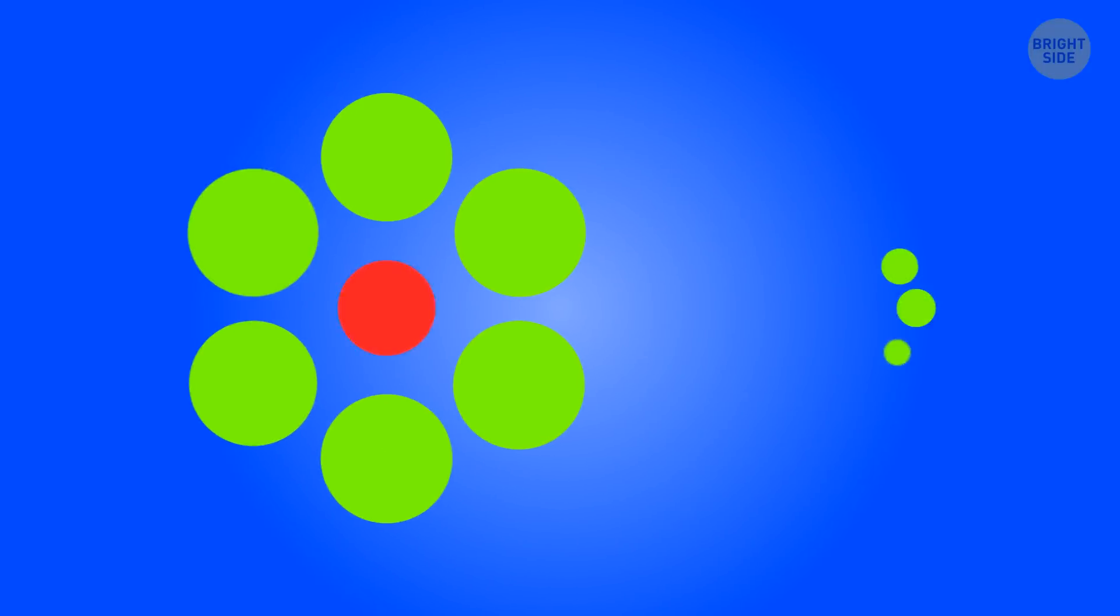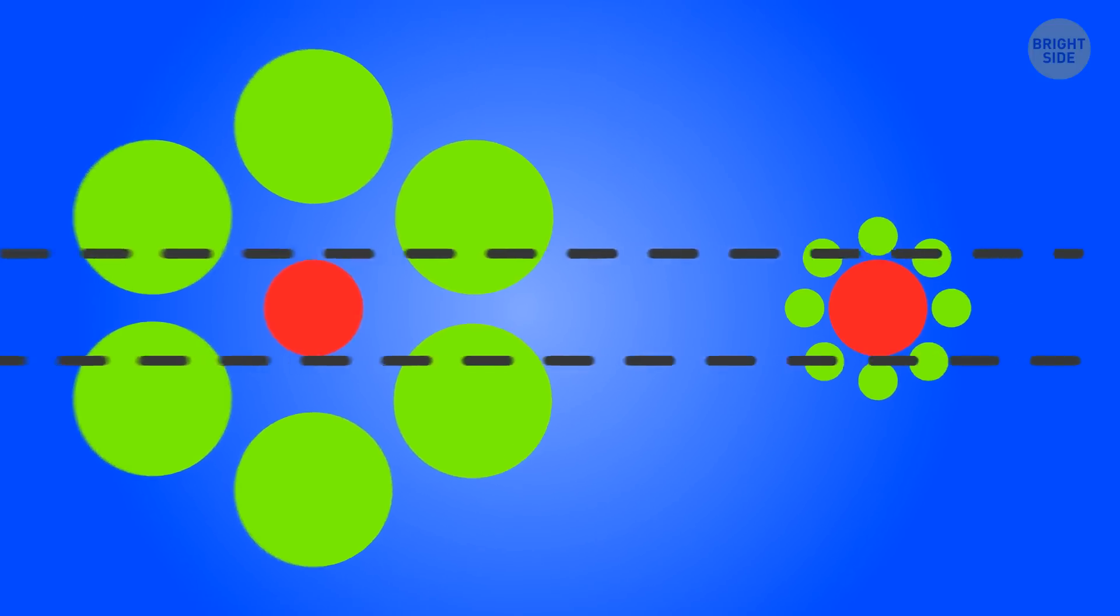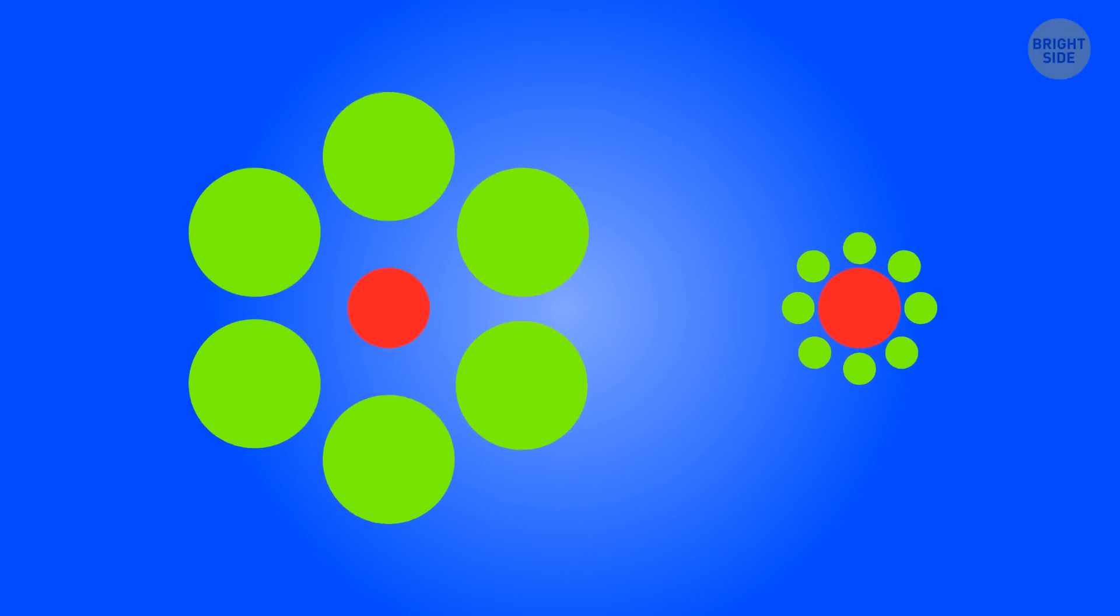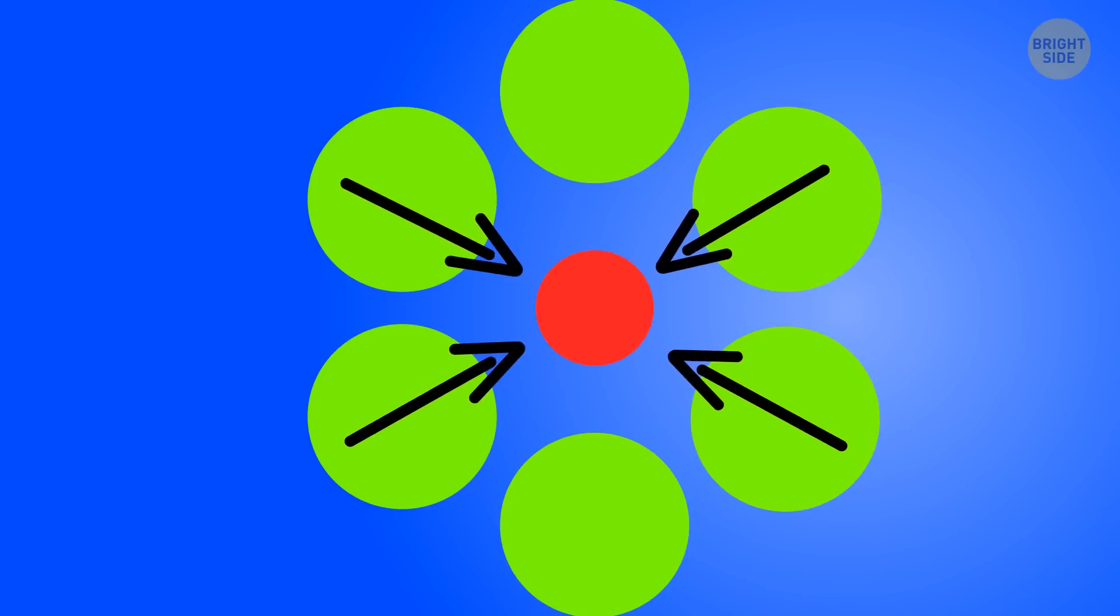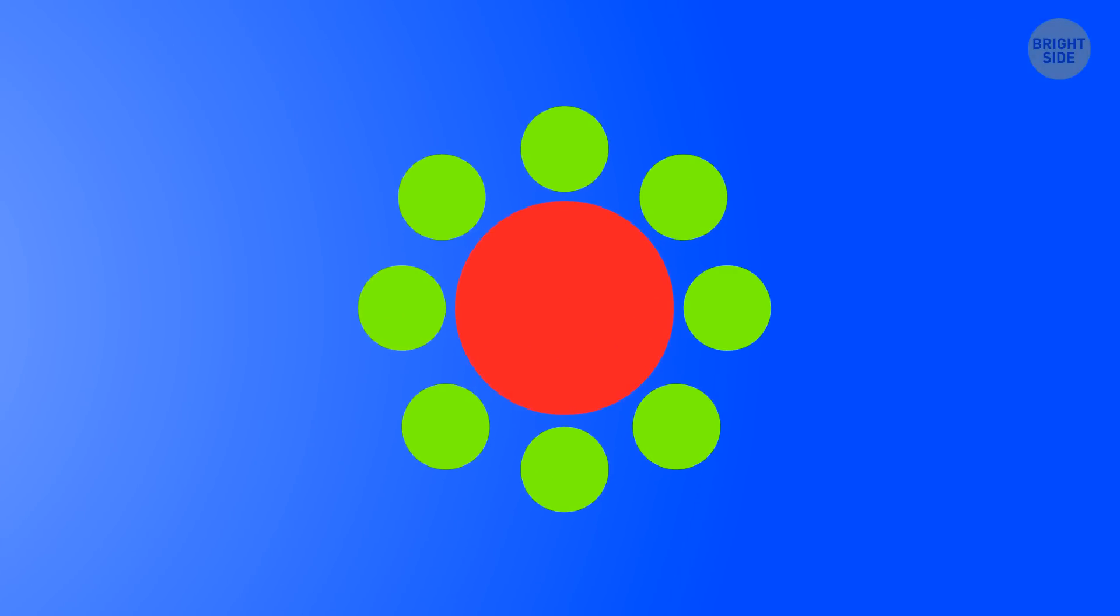In the Ebbinghaus illusion, the two circles in the middle of their circle sets are of the same size. Turns out the way you perceive the size of things is all about context. The circle surrounded by larger ones seems smaller, and the one in the company of smaller circles seems to be a giant.